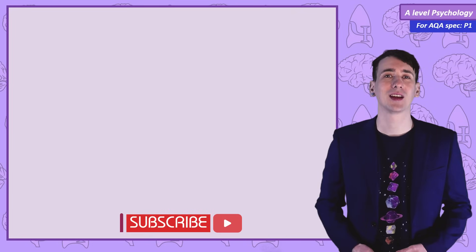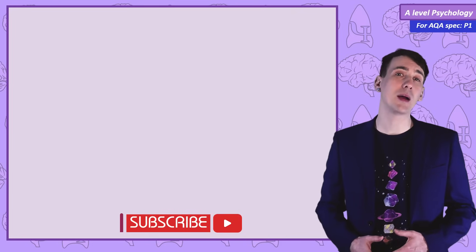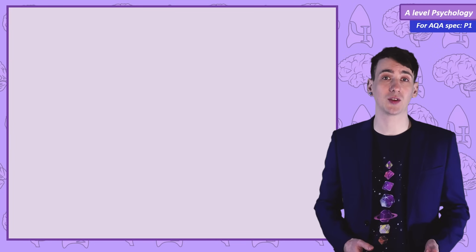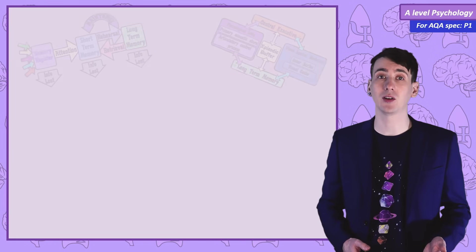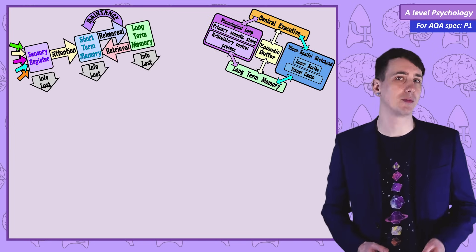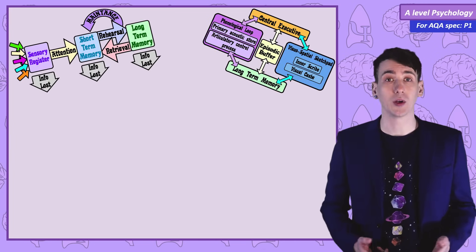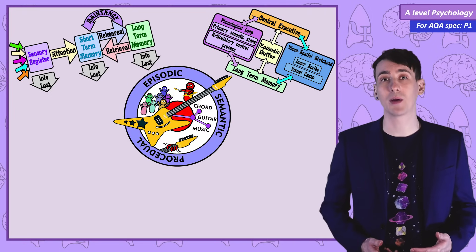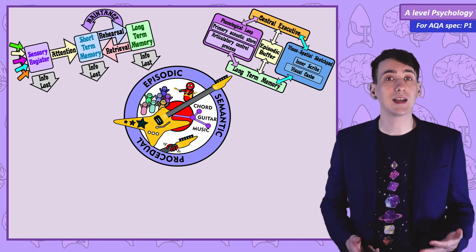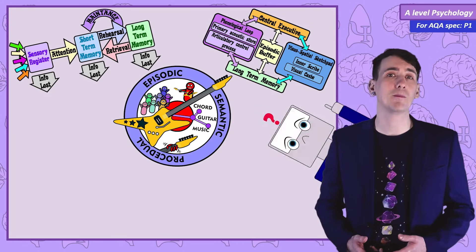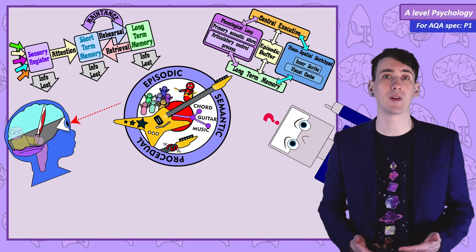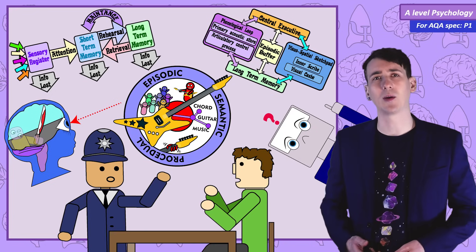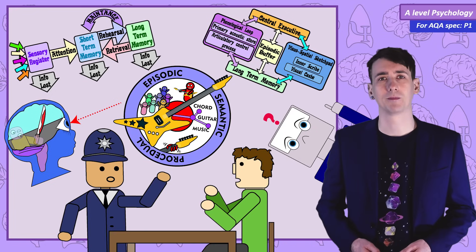Welcome to PsychBoost, this is the memory unit. Over the course of the next 6 videos we are going to look at 2 models of memory, explore different types of long term memory, find out reasons we forget, and look at problems with eyewitness testimony and how police can improve eyewitness testimony.